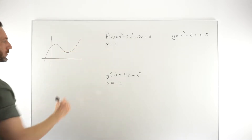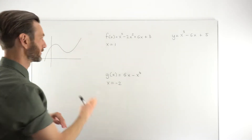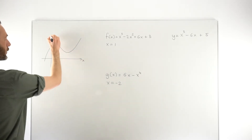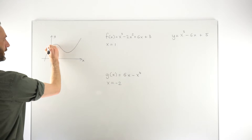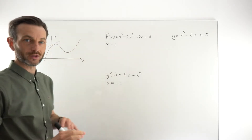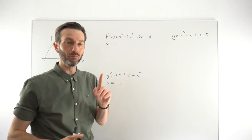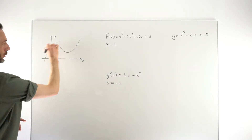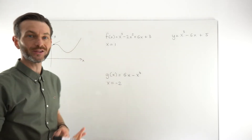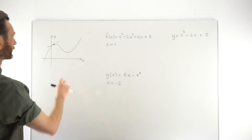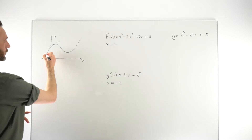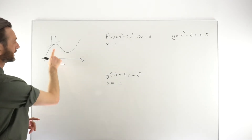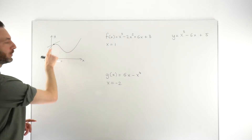So we had something like a cubic function, and we imagined a scenario where we had a tangent line. A tangent line is just a line that touches a curve at one point. We tried to figure out the equation of those tangent lines at some point of tangency.